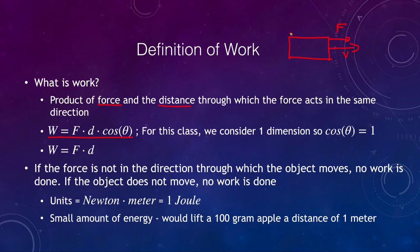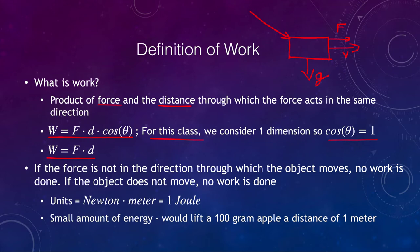That allows us to look at forces acting at some angle relative to the motion. For this class we are not going to do that, so in our cases cosine of theta equals one, and that means work is equal to force times distance. In order for the force to do work it has to be in the same direction. Gravity pulls down on an object, but the gravitational force does no work because it is not in the same direction as the motion. If the object does not move, then no work is done.